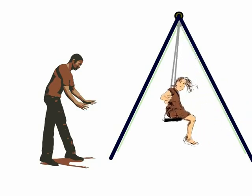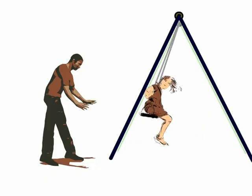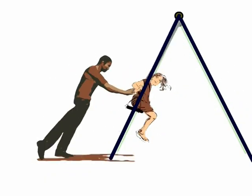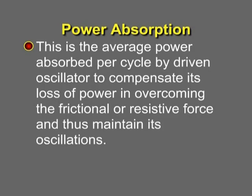We know the child swing — when force is applied to a child swing, it swings. This is an example of driven oscillations. When force is applied to the oscillator, it absorbs energy, that is power, and oscillates. Power absorption is the average power absorbed per cycle by a driven oscillator to compensate its loss of power in overcoming the frictional or resistive force and thus maintain its oscillations.